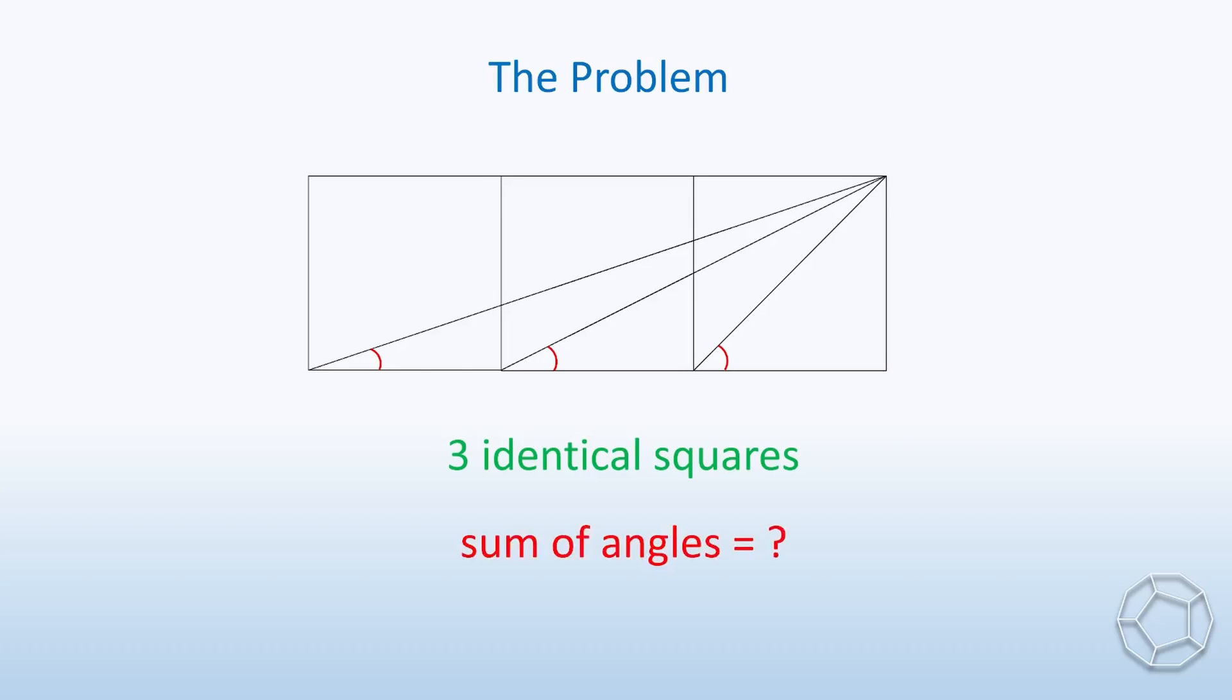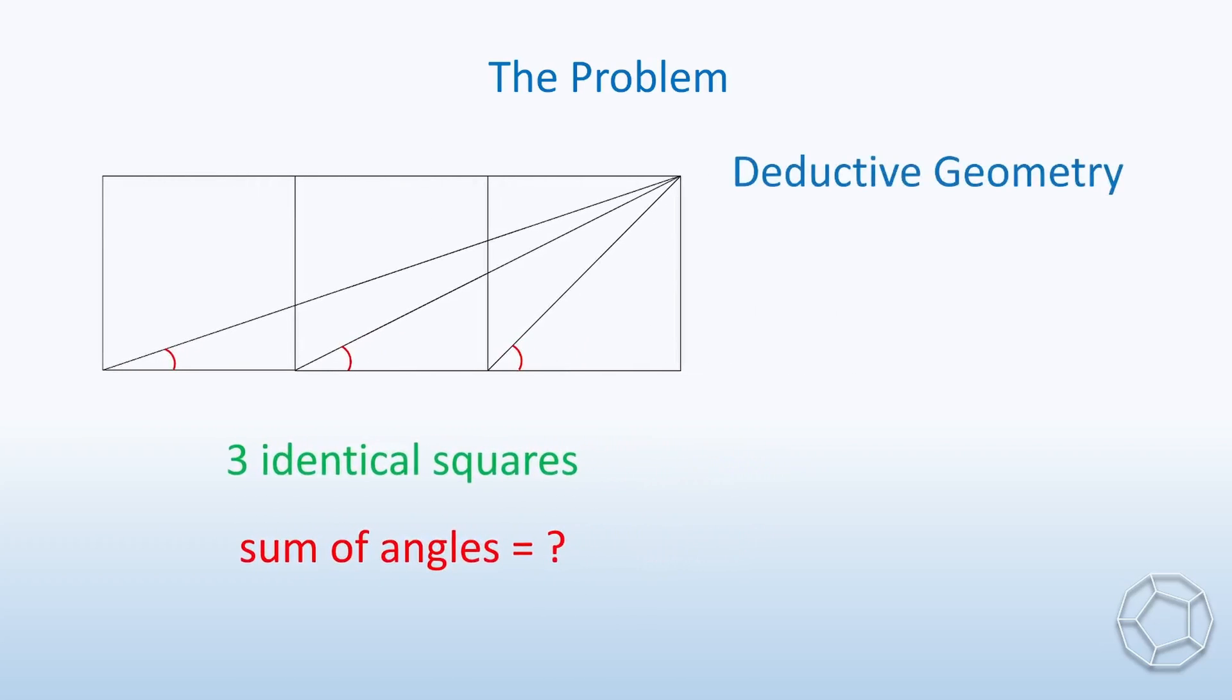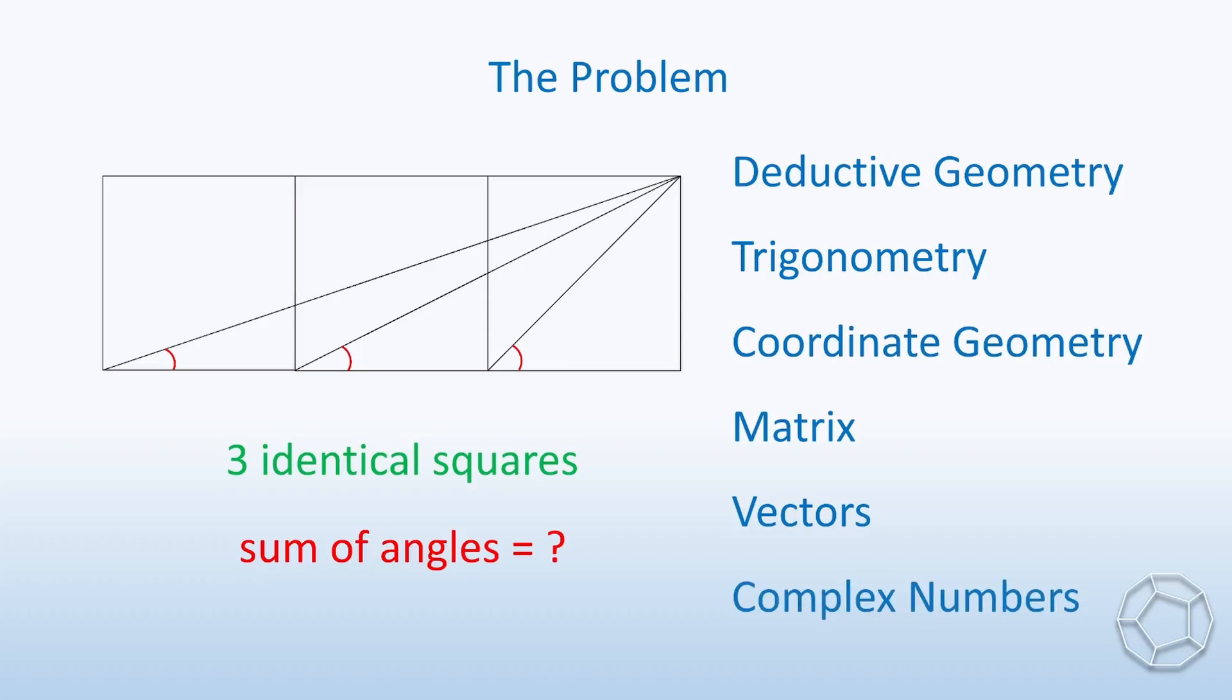Three identical squares are put side by side. Draw the three diagonals like this. What is the sum of these three angles? Let's look at nine different approaches to solve it. They include deductive geometry, trigonometry, coordinate geometry, matrix, vectors, and complex numbers.